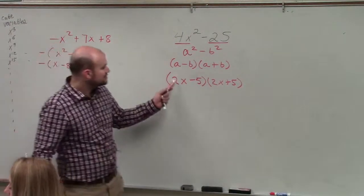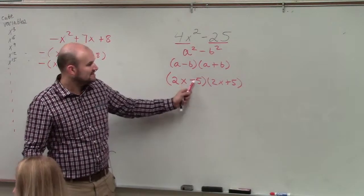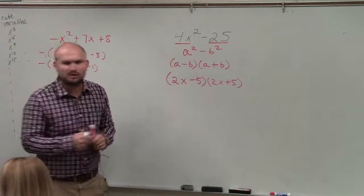Let's double check our work. What's 2x times 2x? 4x squared. What's negative 5 times positive 5? Negative 25. What about those middle terms?